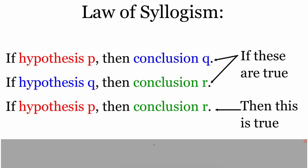Our next law of logic is something called the law of syllogism. This is where we've got multiple conditional statements happening. We've got the first statement: if hypothesis P, then conclusion Q. If we take that conclusion Q and make it a hypothesis in a second statement, then it gives us conclusion R. If these first two statements are true, then we can take those two original statements and put them together as a single statement, and that statement will also be true.